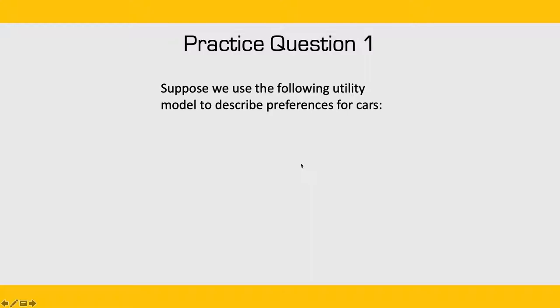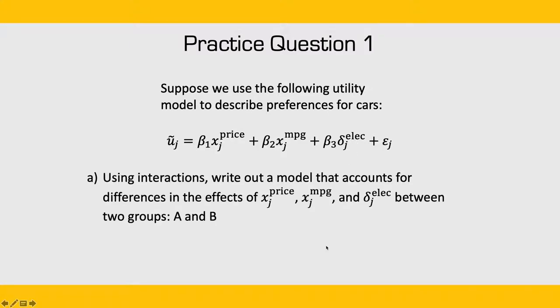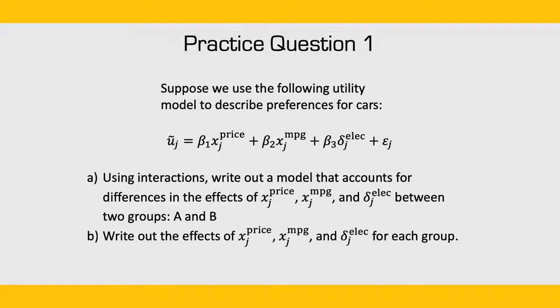For practice question 1, suppose we use the following utility model to describe preferences for cars, with attributes: price, fuel economy, miles per gallon, and a dummy coefficient 'elect' which takes 1 if the vehicle is electric and 0 otherwise. For part A, using interactions, write out a model that accounts for differences in the effects of price, fuel economy, and electric vehicle type between two groups A and B. For part B, write out the effects for price, MPG, and electric vehicle type for each group.